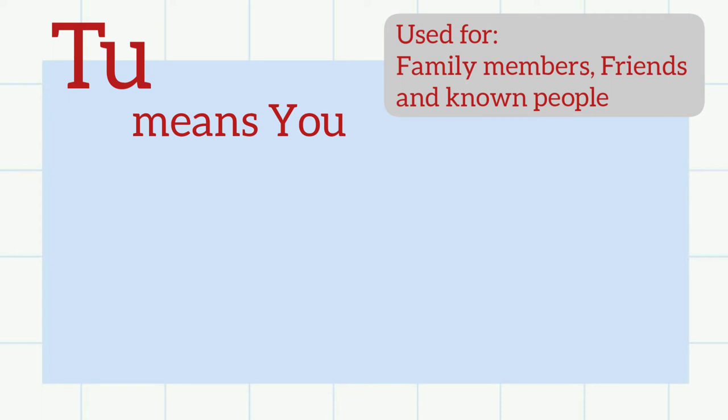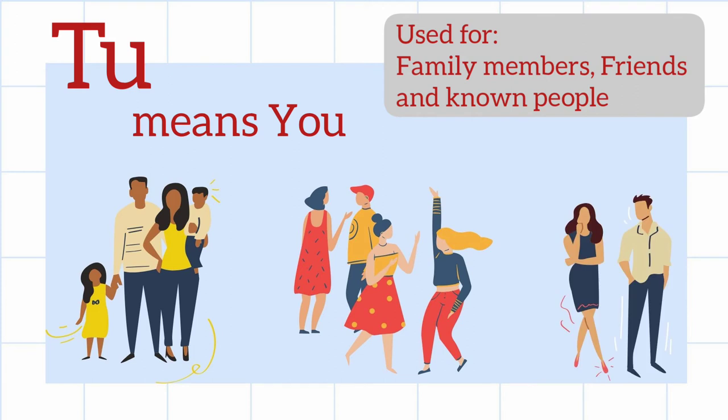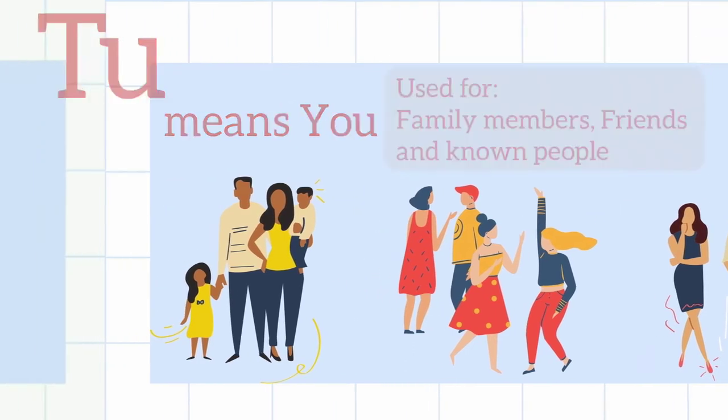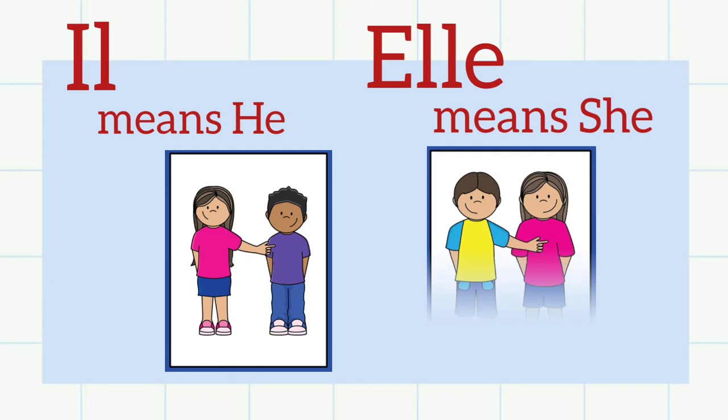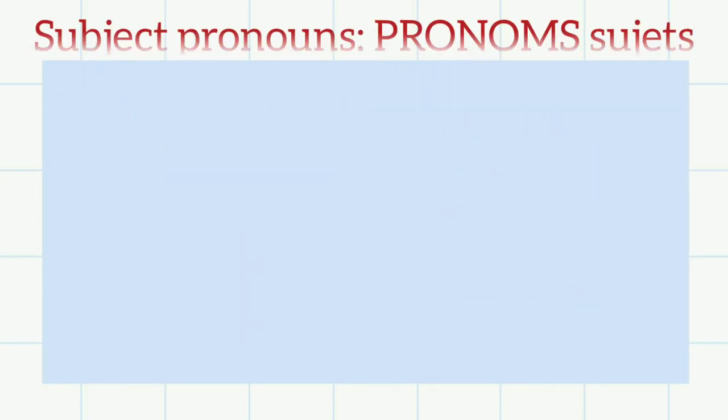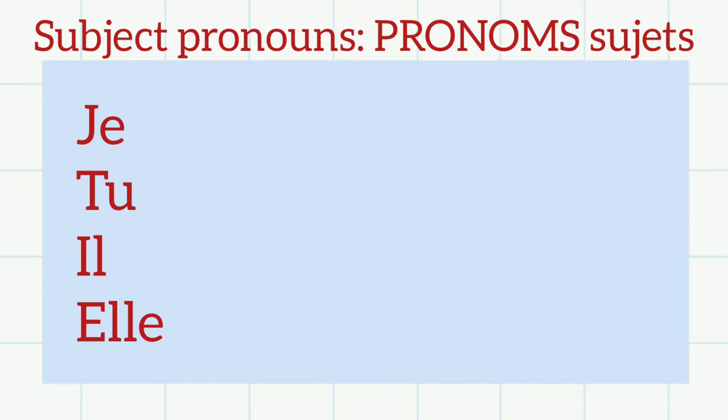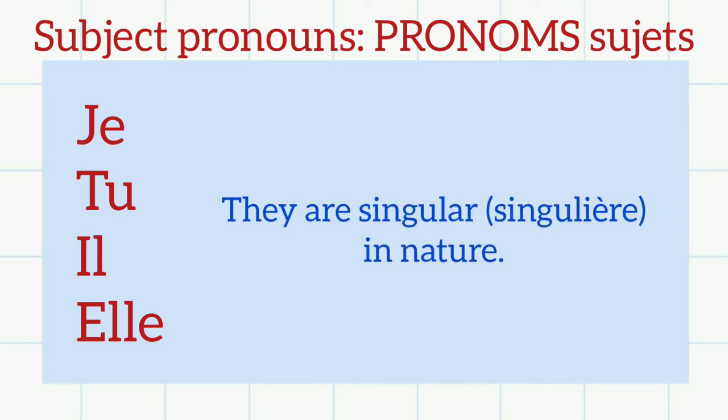The next comes il. Il means he. The next is elle. Elle is for she. These four subject pronouns, pronoms sujets, that we have done are singular in nature. They are singular.